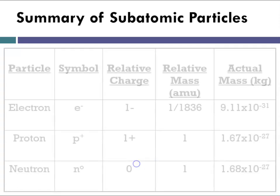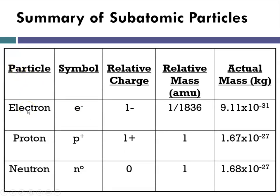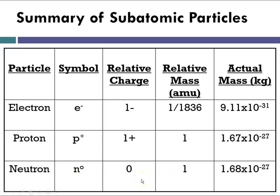Here is a summary of the subatomic particles with their symbol, relative charge, relative mass in atomic mass units, and actual mass in kilograms. The electron, symbol E superscript negative, has a charge of minus 1, a relative mass of 1/1800 of an AMU, and a true mass of 9 times 10 to the negative 31 kg. The proton, symbol P superscript plus, has a charge of plus 1, relative mass of 1, and actual mass of approximately 1.7 times 10 to the negative 27 kg. The neutron, symbol N superscript 0, has a relative charge of 0, relative mass of 1, and a mass of approximately 1.7 times 10 to the negative 27 kg.